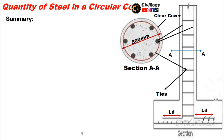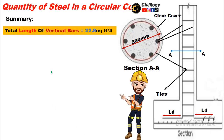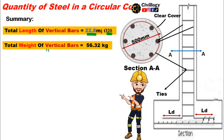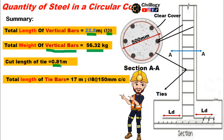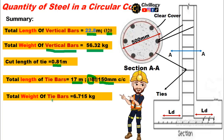Let's summarize: for this column, the total length of vertical bars is 22.8 meters of 20 mm diameter bars, with a total weight of 56.32 kg. The cut length of a single tie is 0.81 meters, and the total length of tie bars is 17 meters of 8 mm diameter bars at 150 mm center-to-center spacing, with a total weight of 6.71 kg.